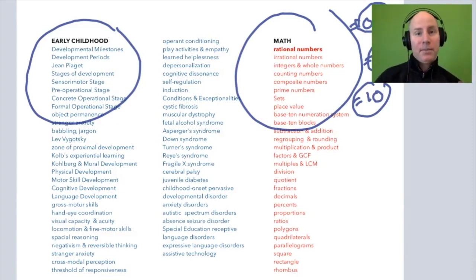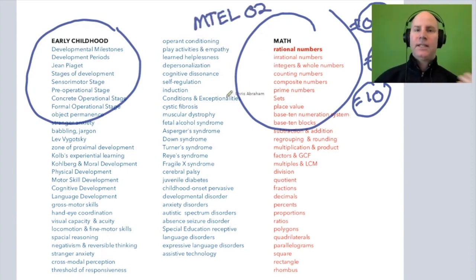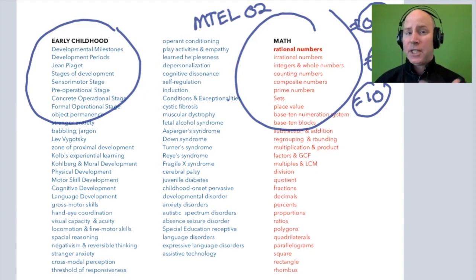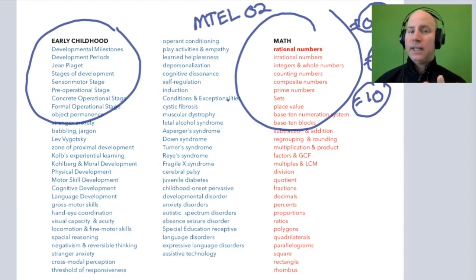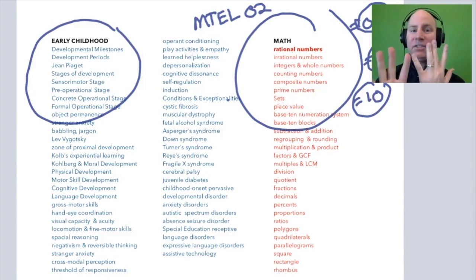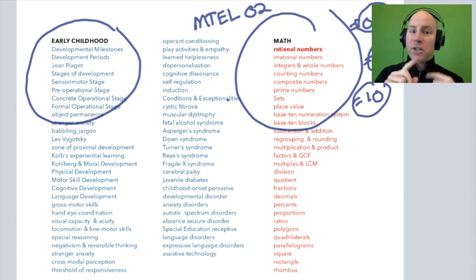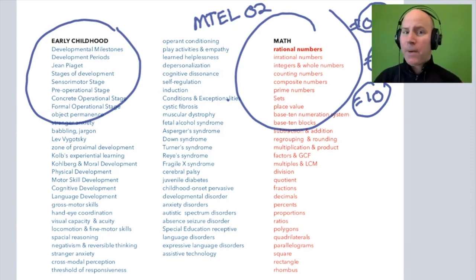Whereas an early childhood exam like the MTEL 02 is an exam that has a little bit of everything. It has early childhood, special education, children's literature, early literacy, math, science, English, history questions, geography questions, and two essays which incorporate lesson planning. Lots of moving parts here.